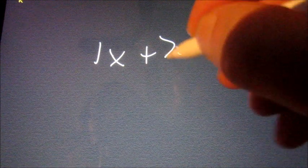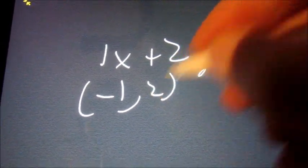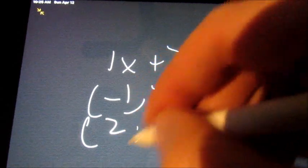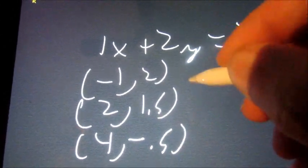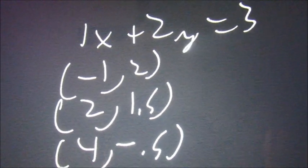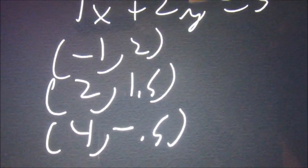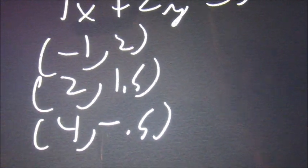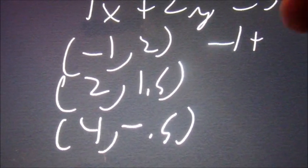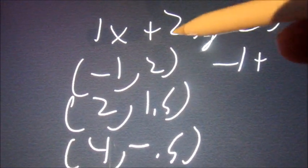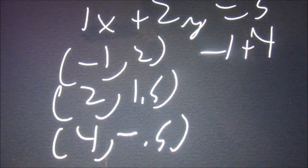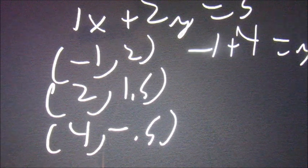You're going to get questions that say something like 1x plus 2y equals 3, and it's going to ask you: is negative 1, 2 a solution? What you're going to do is plug the first number in for x, the second number in for y, solve that, and see if you get 3. So for negative 1, 2: 1 times negative 1 is negative 1, plus 2 times 2 is 4 — and negative 1 plus 4 does equal 3. So the answer is yes.